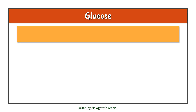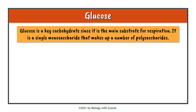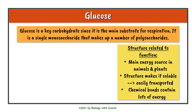Now let's talk about glucose in a bit more detail. Glucose is a very important carbohydrate because it's the main substrate for respiration — it's the main energy source in animals and plants. Its structure is related to its function: it is soluble, which means it can be easily transported around the animal or plant, and its chemical bonds contain lots of energy, which is really useful.